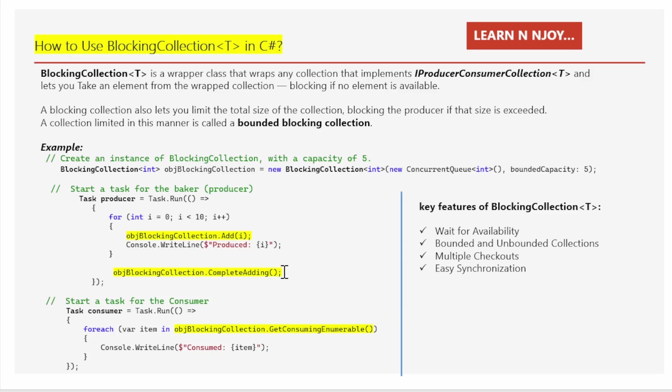The Consumer task removes items from the blocking collection and processes them. If there are no items available, the consumer will wait until items are produced. This pattern ensures that the producer and consumer operate efficiently without overrunning each other, thanks to the blocking behavior managed by BlockingCollection<T>. Overall, it simplifies the implementation of the producer-consumer pattern in a multi-threaded environment and handles synchronization and blocking automatically.